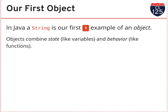The reason this works is because strings are our first example of what's referred to in Java as an object. Objects combine state and behavior. They bring together two things we've already seen in programs: the ability to store data like variables, and the ability to associate behaviors — algorithms or functions — with a particular variable. An object variable can not only store information but also do things.